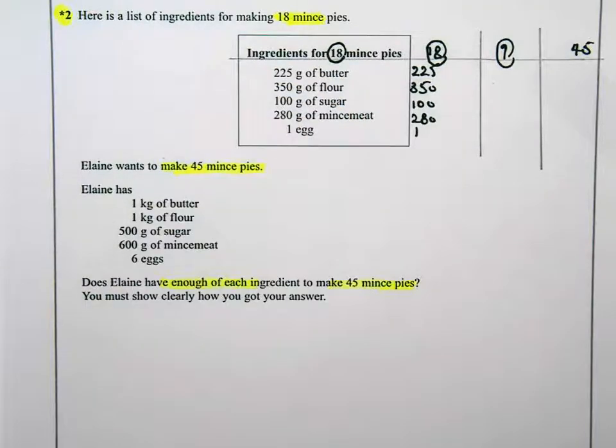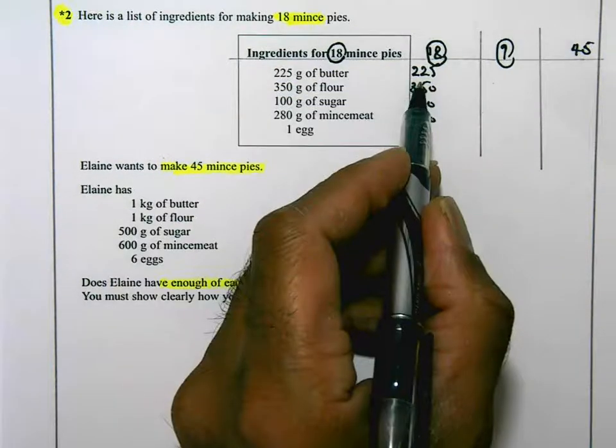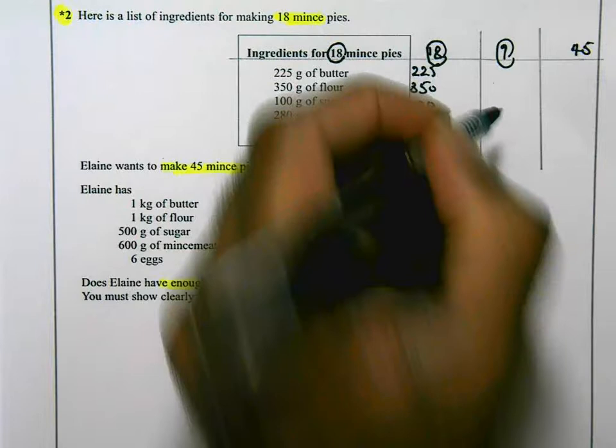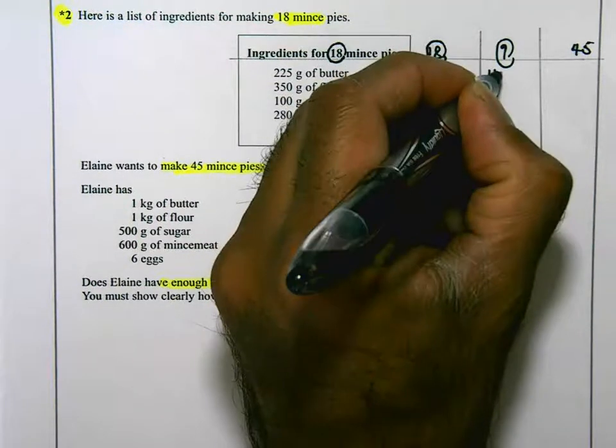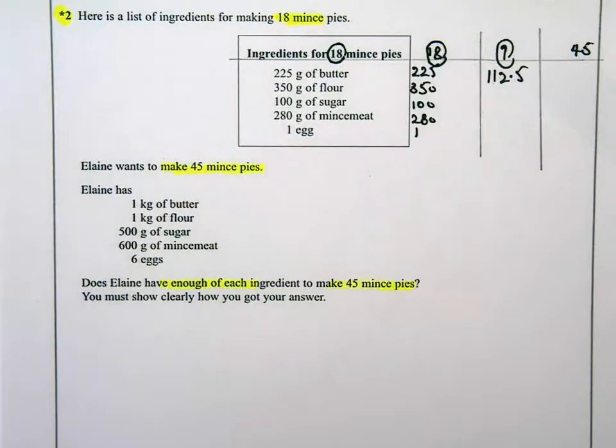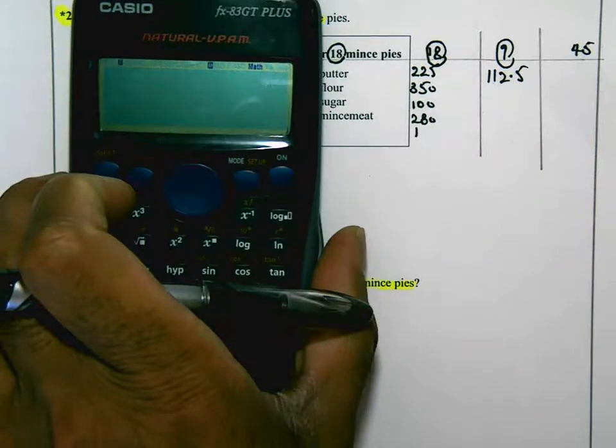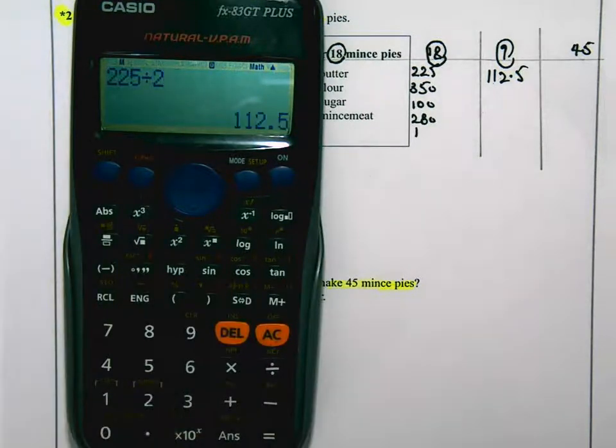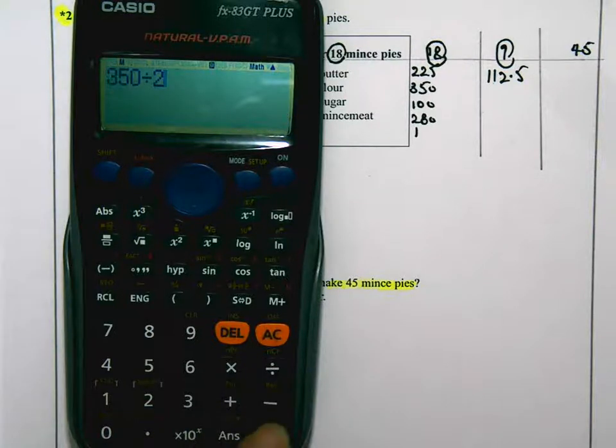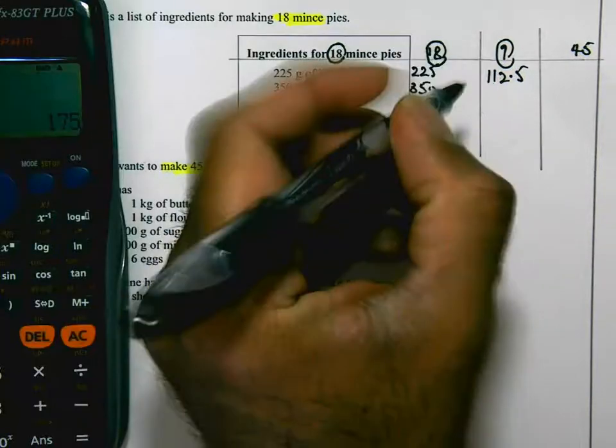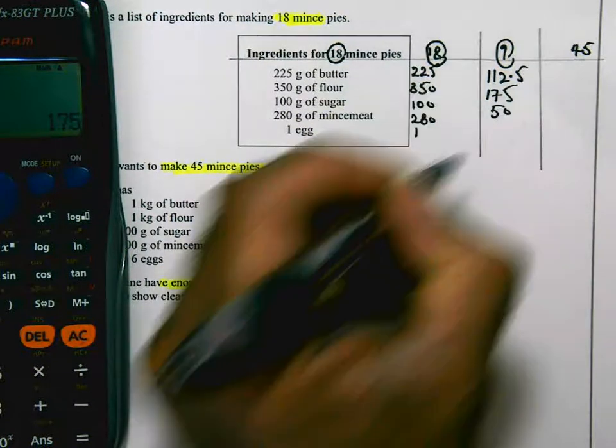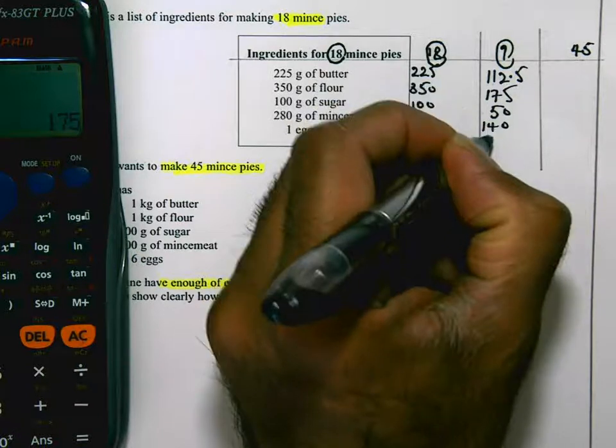For 9 mince pies, I'm going to need half of 225. If you don't know how to work it out, use a calculator. Do 225 divided by 2, which is going to give you 112.5. Same with 350 divided by 2 equals 175, 100 divided by 2 is 50, 280 divided by 2 is 140, and 1 divided by 2 is a half.